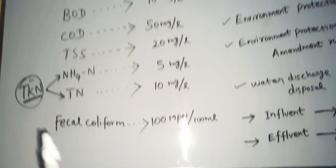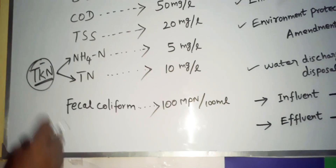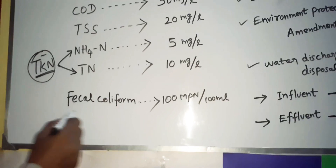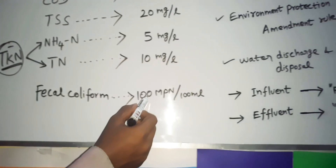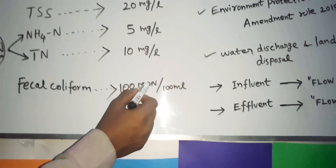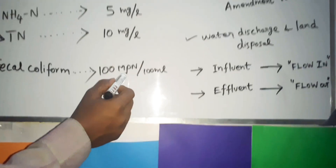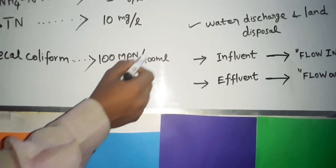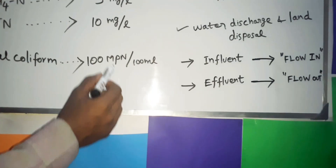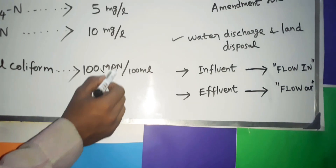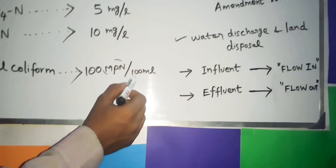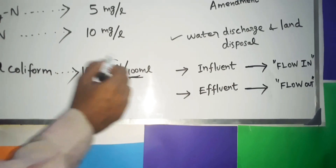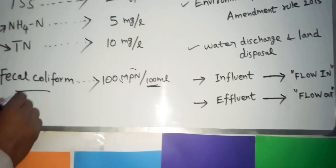The TKN is a combination of Total Nitrogen. For information, I am telling you that Fecal Coliform is 100 MPN per 100 ml — that is the Most Probable Number — 100 ml Most Probable Number for Fecal Coliform.